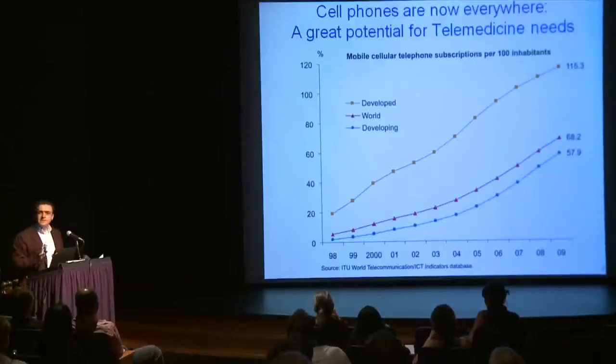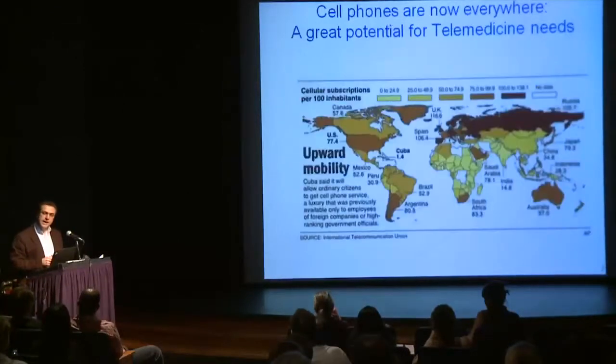As we know, cell phones are now everywhere. We have close to 5 billion cell phone subscribers in the world, and the majority of these people are actually living in resource-poor countries. By 2015, close to 90% of the entire world population will carry at least one cell phone subscribed to a network. If you combine this with the fact that our cell phones are getting better in terms of software and hardware, this existing infrastructure holds a significant promise to be utilized as a health monitoring platform.